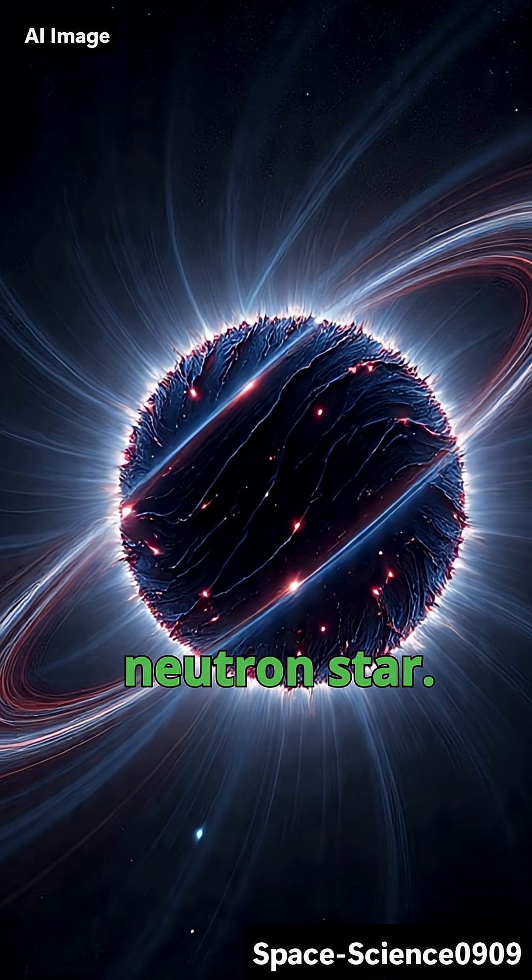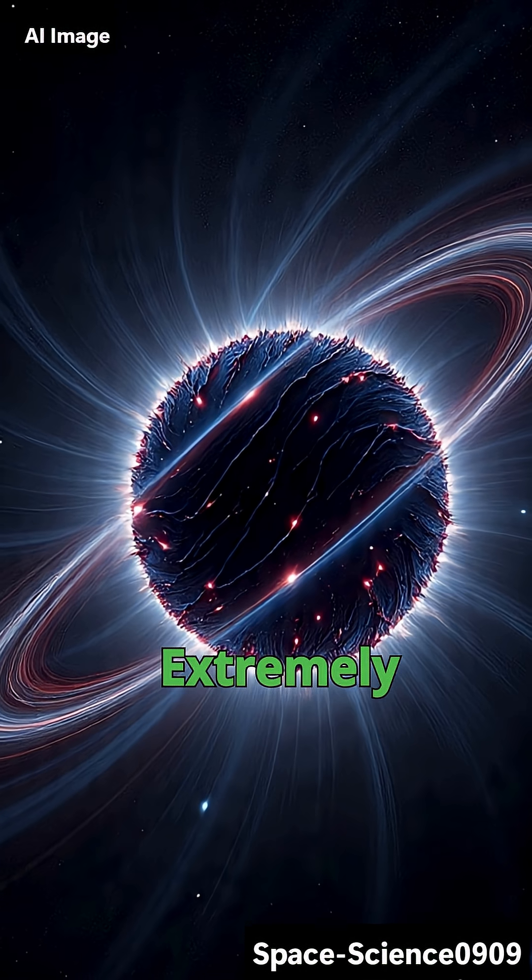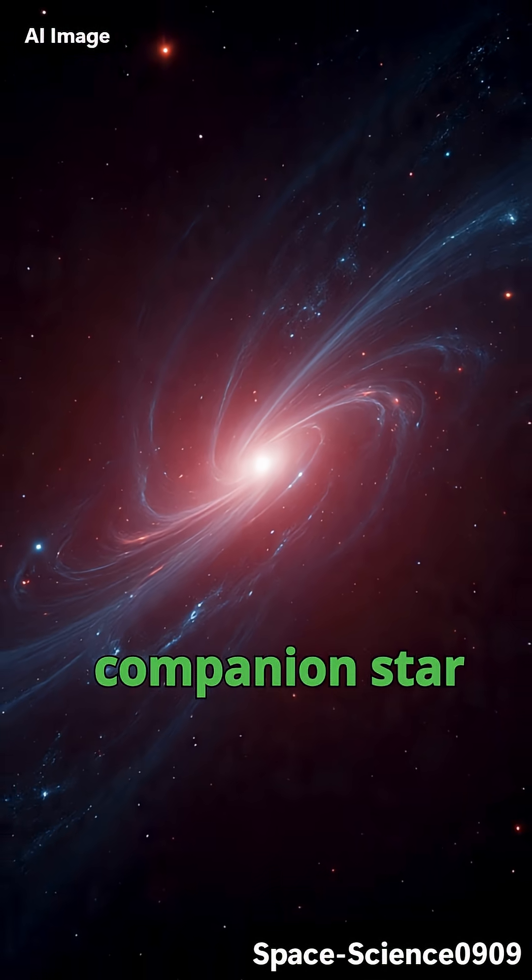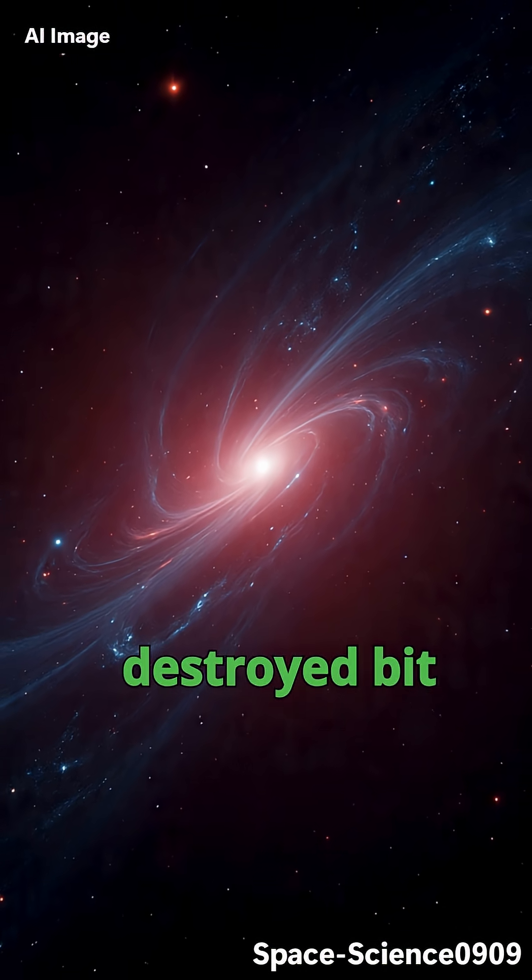A pulsar is a neutron star, extremely dense, spinning super fast. In a Black Widow, the pulsar's companion star is tiny and getting destroyed bit by bit.